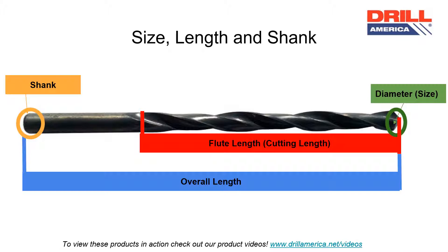The shank is located on the non-cutting end of the drill bit — it is the part of the drill bit that is held in the machine. The flute length is described as the part of the drill that can cut material. The overall length describes the entire length of the drill bit. The diameter, also called the size, describes the size of the hole the drill bit will make.